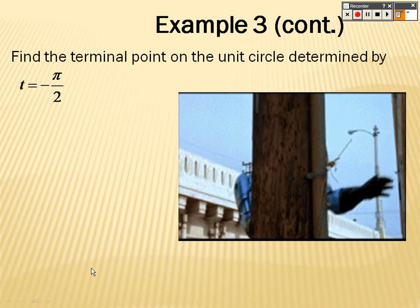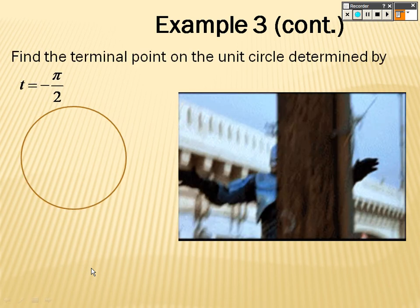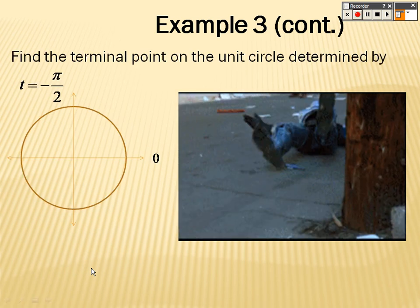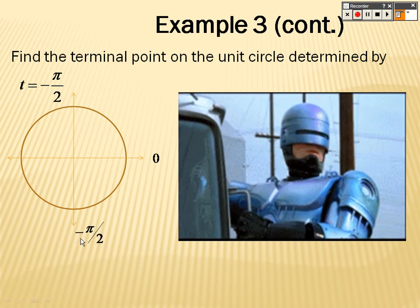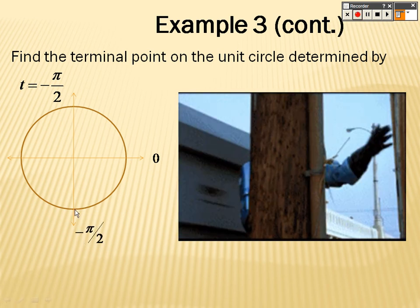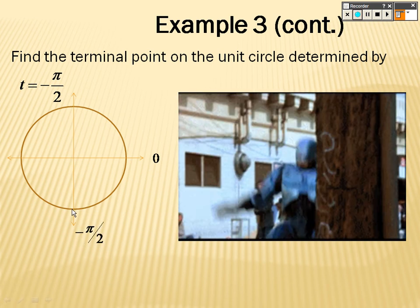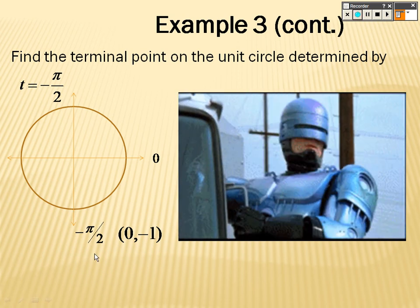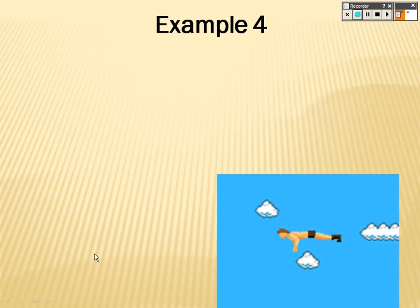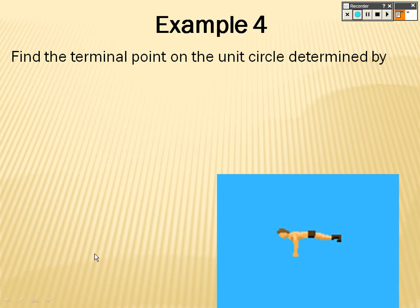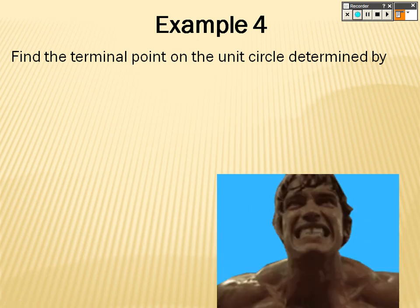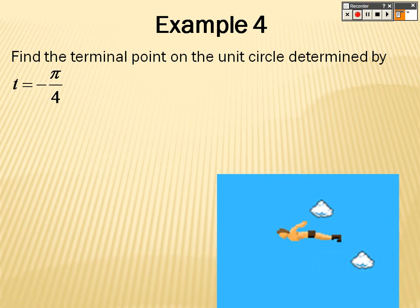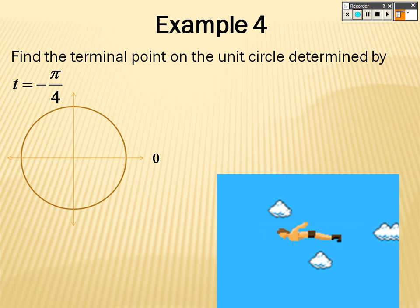Find the terminal point in the unit circle determined by -π/2. Negative π/2 means I go down, so this point would be going over nothing and down negative 1 — that's (0, -1). Now find the terminal point determined by -π/4. Negative π/4 means I go down, and if -π/2 is all the way down, -π/4 is going to end up somewhere in the middle.